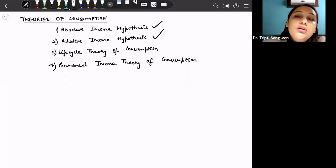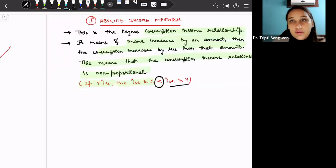So these were the two consumption theories that we have discussed till now. Today we will focus on life cycle theory of consumption and permanent income theory of consumption. Let us start with the life cycle theory of consumption.